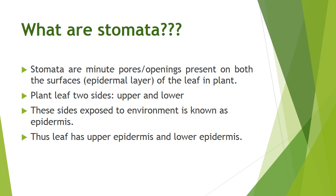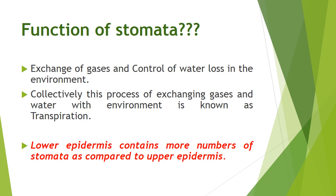The leaf contains two surfaces — upper surface and lower surface — also called epidermal layers. The plant leaf has two sides, upper and lower, which are exposed to the environment. This is known as the epidermis. Any leaf of the plant has an upper epidermis and a lower epidermis, and the pores or openings present on these surfaces are known as stomata — basically minute pores or openings present on both surfaces of the leaf.